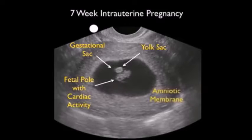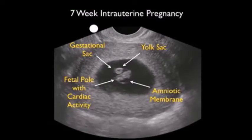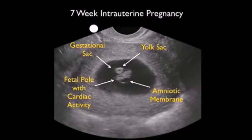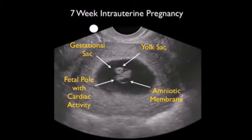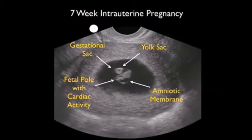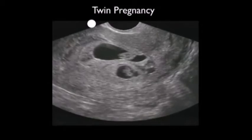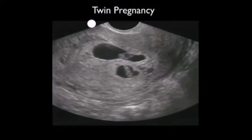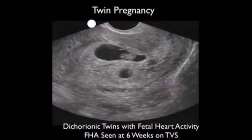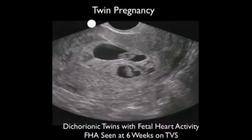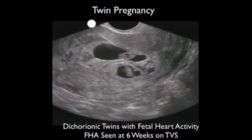We also see another very important finding here: the amniotic membrane billowing out from around the fetal pole. Eventually the amniotic membrane will plaster down on the margins of the gestational sac to form the amniotic cavity in which further growth of the fetus will occur. Here's an interesting video clip showing a twin pregnancy — two gestational sacs signifying dichorionic twins, with little fetal poles and a flicker of heartbeats visible within each sac. Fetal heart activity is seen at about 6 weeks on transvaginal sonography and about 7 weeks on transabdominal sonography.